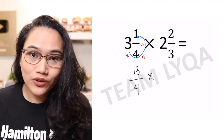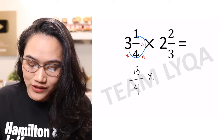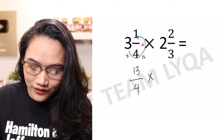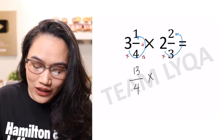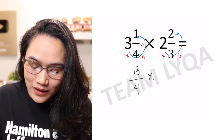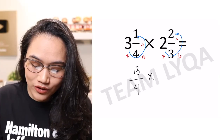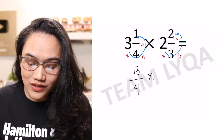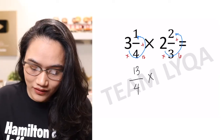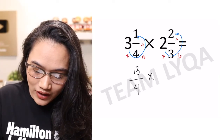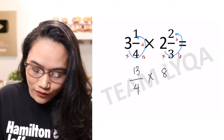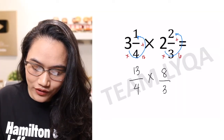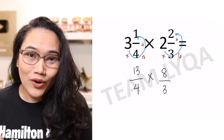Next, we're going to look at 2 and 2 thirds. Again, we rotate it. We have 2 times 3 which is 6, plus 2 which is 8. So 2 and 2 thirds is 8 over 3. Once you have that, we can proceed to the next step which is just to multiply.